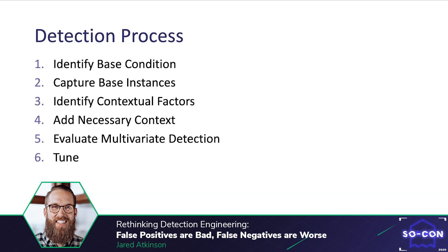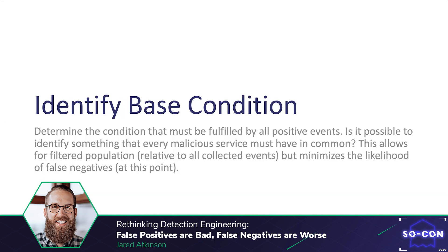I came up with a six-step process: (1) identify the base condition, (2) capture base instances, (3) identify contextual factors, (4) add necessary context, (5) evaluate a multivariate detection, and (6) tune or provide feedback. The first step is to identify the base condition — determine the condition that must be fulfilled by all positive events. For instance, is it possible to identify something that every malicious service must have in common? This allows us to filter the population while minimizing the likelihood of false negatives. If we capture all services, we should conceptually have no false negatives.